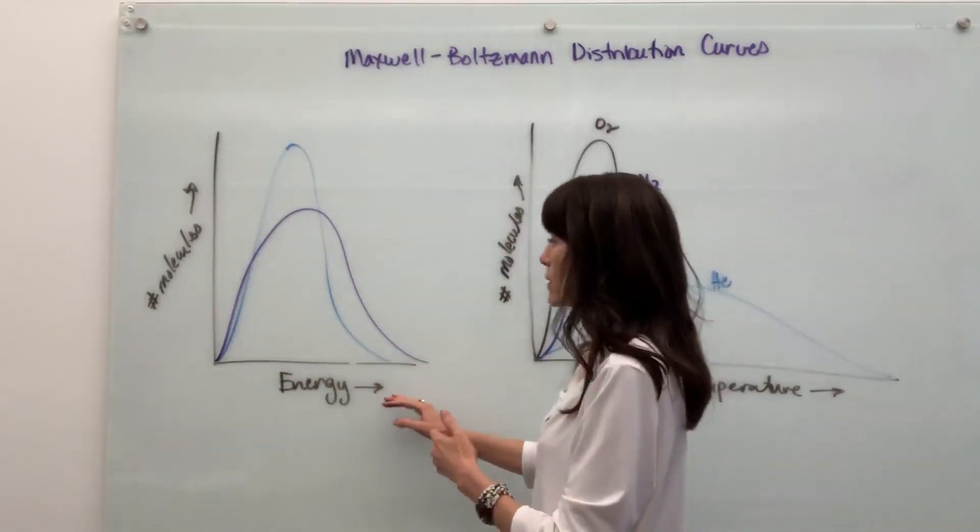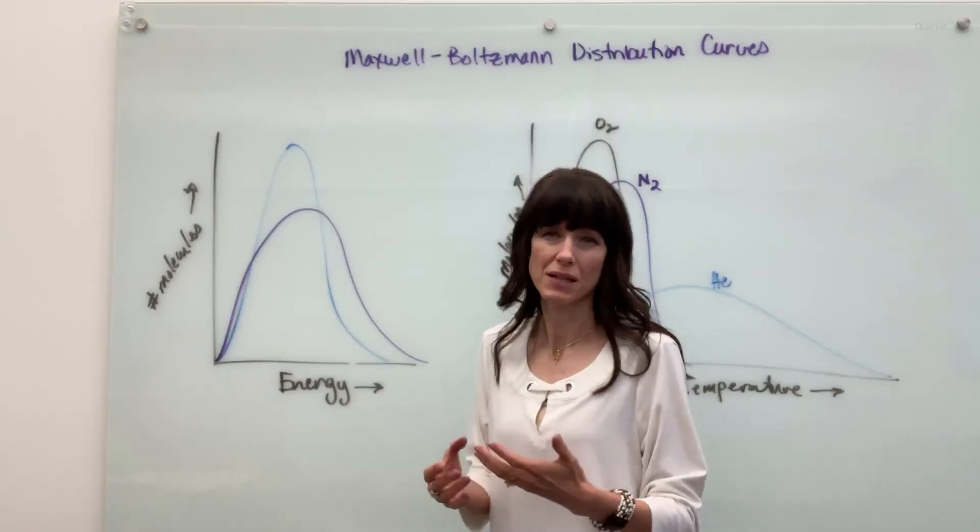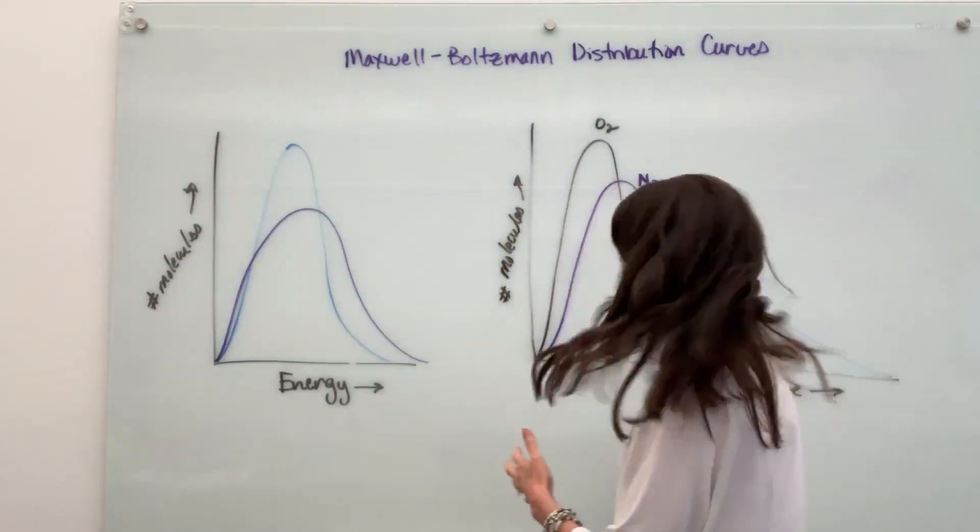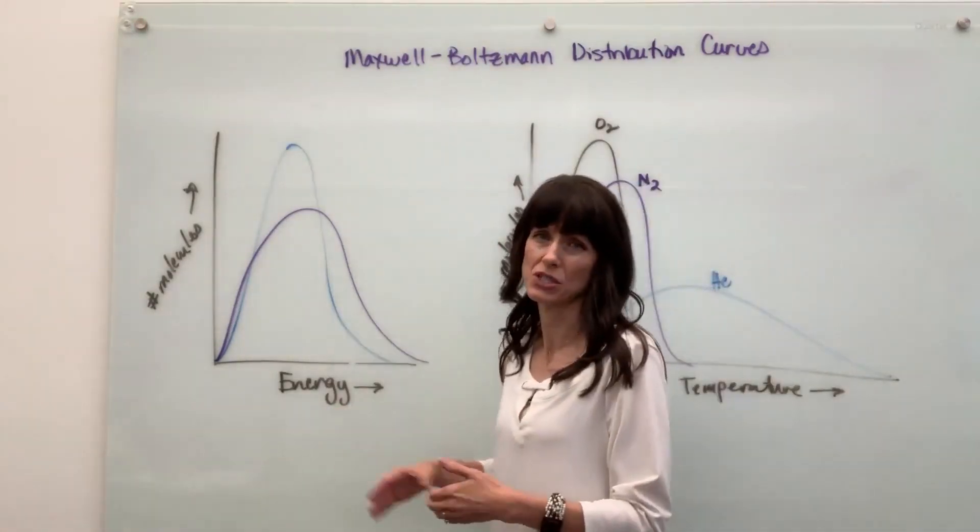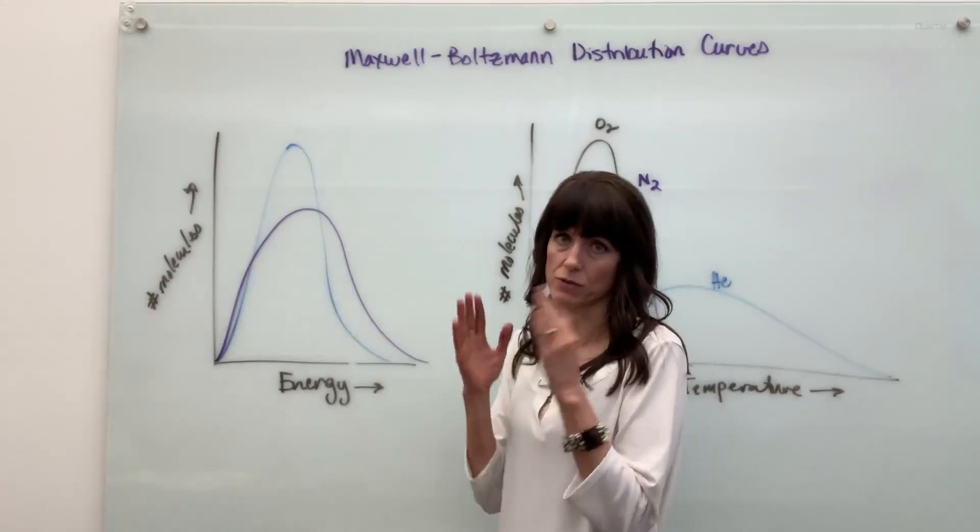What this shows us is the energy for these particular molecules. This is actually going to be speed, so how fast the molecules are moving. It could also be temperature. This one I made specific, this one I just made really generic, but let's just keep it generic for this first one: energy.